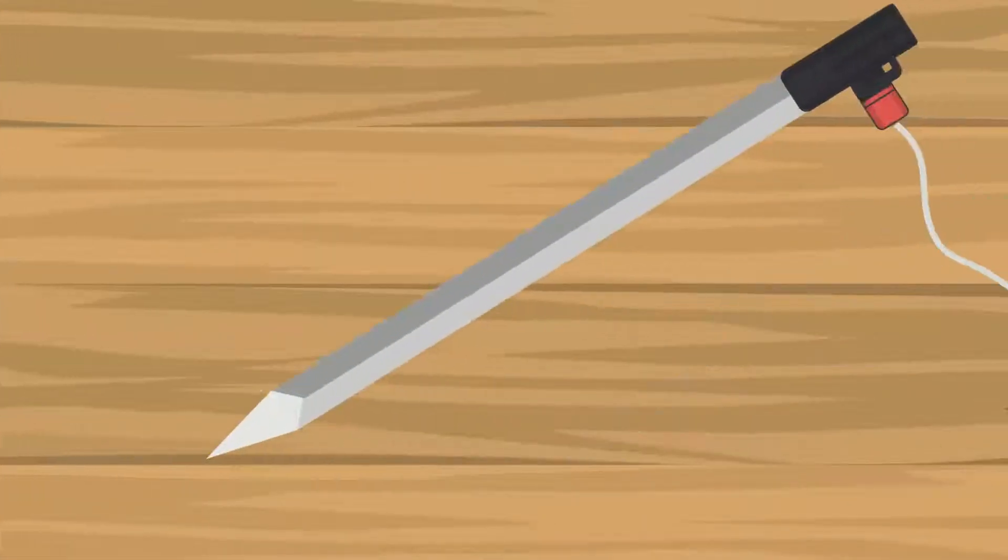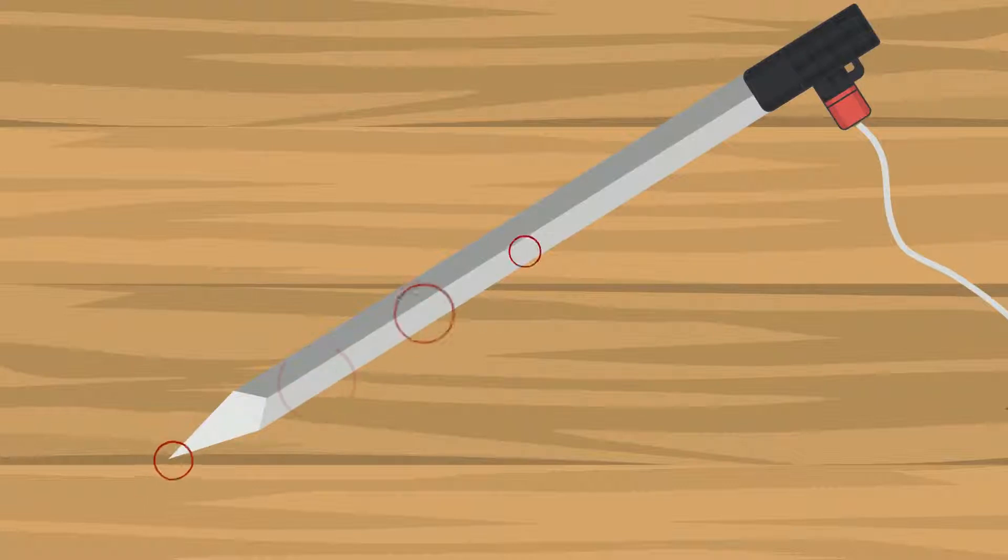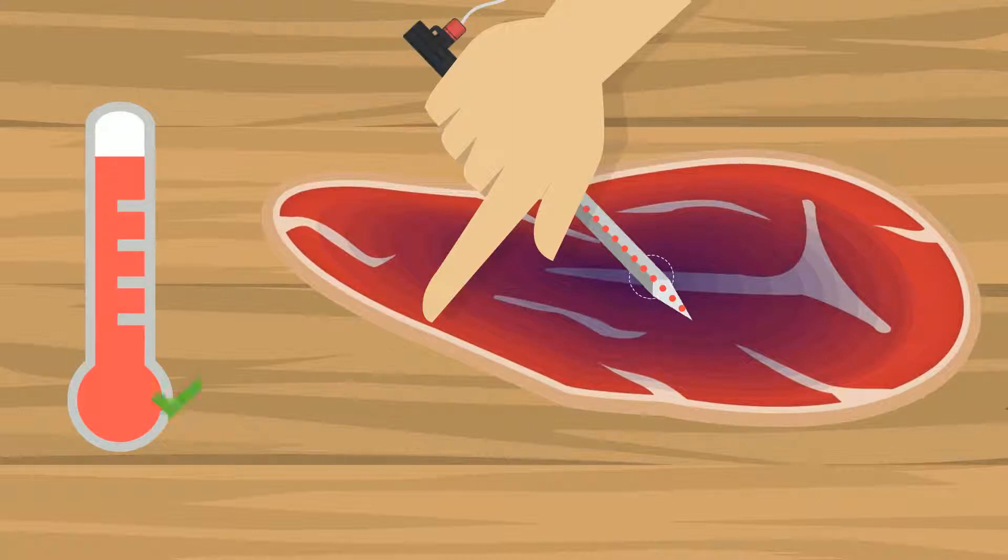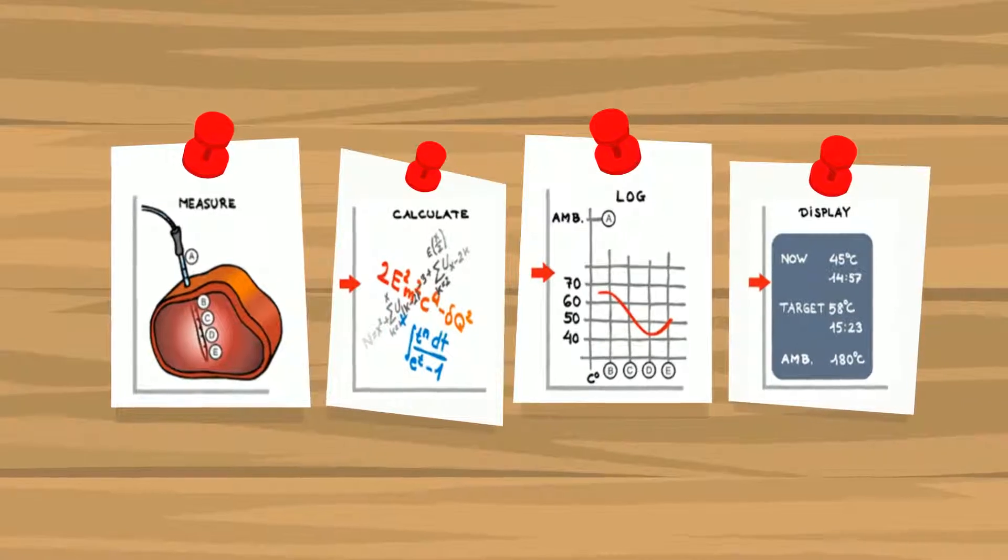Our developed algorithm and multiple measurement points calculate the exact core temperature no matter how the thermometer is placed in the meat. CookPerfect is thereby the only meat thermometer that guarantees the best result, every time.